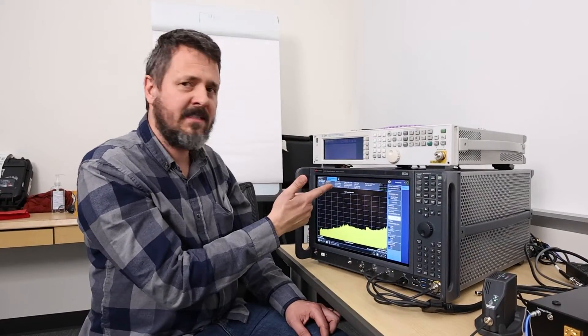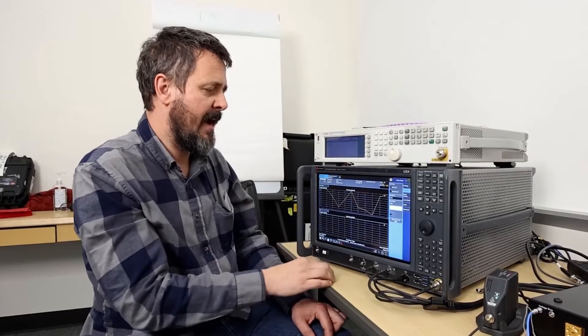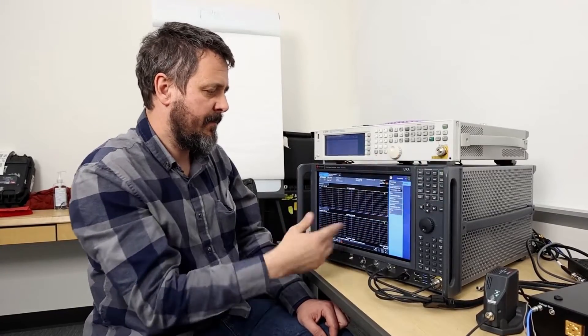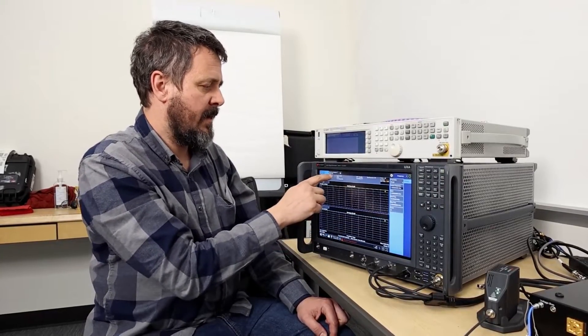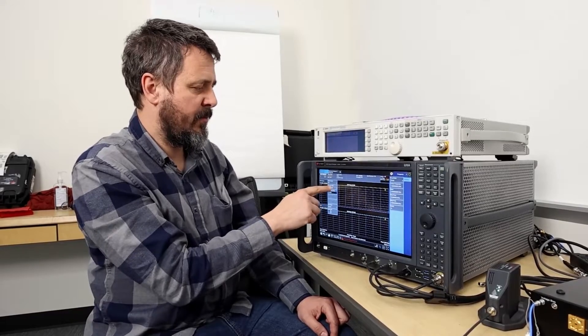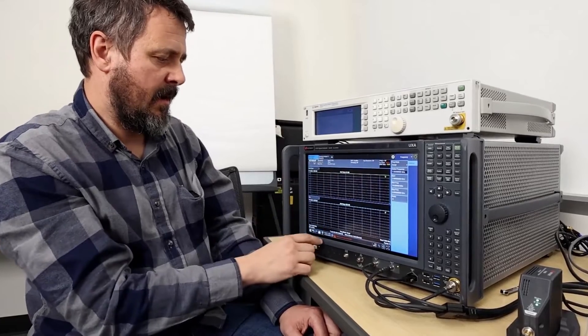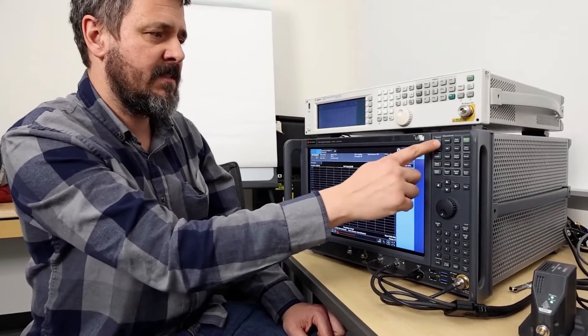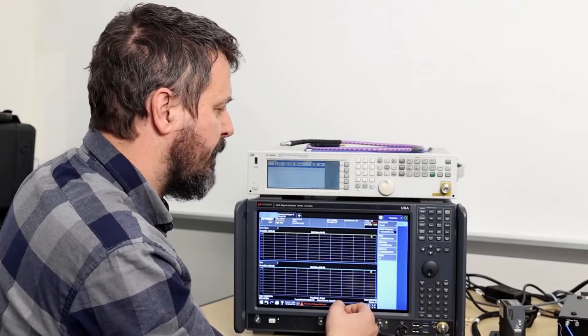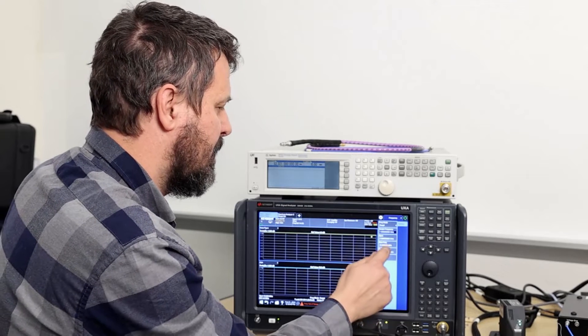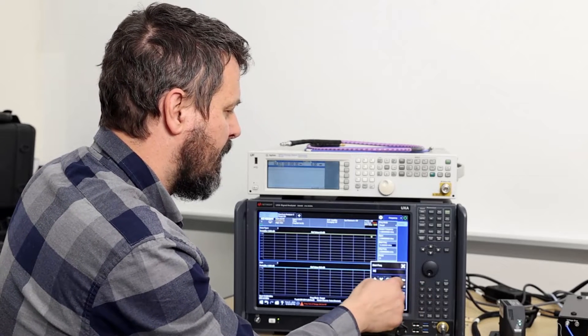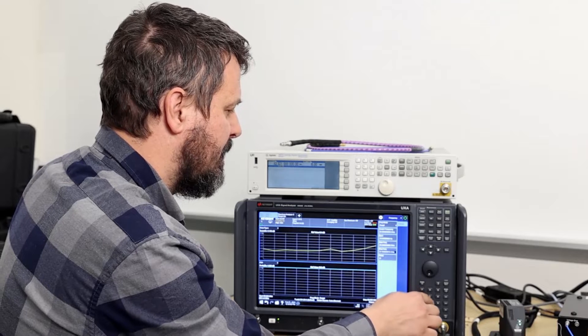So I'm going to switch from the SA mode to the noise figure app. Preset the noise figure app and then I need to make sure that my input for it is external RF, so it's already set up. Then I need to set my start and stop frequency. My amplifier works over 55 to 67 gigahertz, so I'll start at 55 gigahertz, stop at 67 gigahertz.